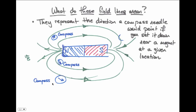Down below the bar magnet, the compass appears to point down and to the right. Over on the right-hand side, the compass needle appears to point up and to the right. Above the bar magnet, the compass needle appears to point down and to the right. These magnetic field lines are a prediction of the direction that a compass needle would be turned.